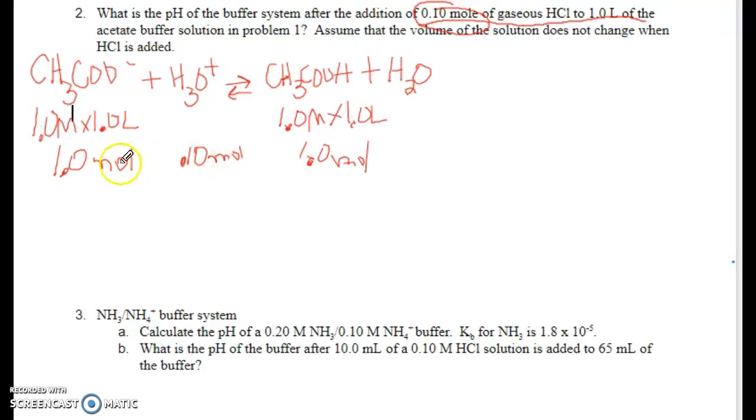We're going to do the stoichiometry. If we react these, the hydronium is going to be the limiting reactant, so we're going to do minus 0.10. All of that is going to get used up in the buffer. So it takes all of the acid, but in order to do that, I have to use up 0.1 mole of my acetate, so that's going to leave me with a final amount of 0.9 moles.